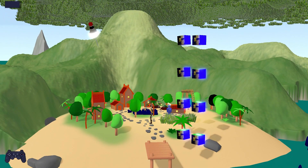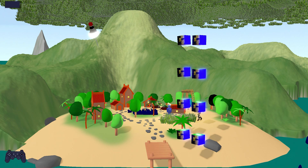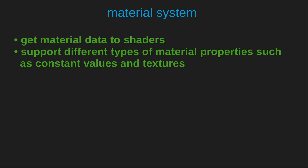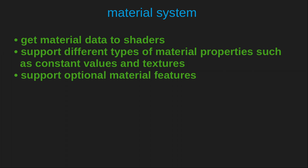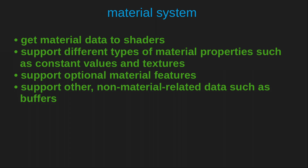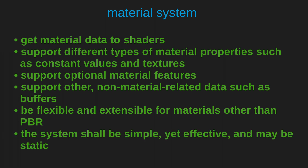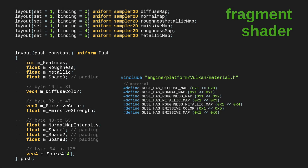We want an entry-level material system — the goal is to prepare the engine for advanced render techniques or maybe a simple game. It is okay if we have to recompile the engine to add a new shader or material. So goal number six is to have a static material system and not require dynamic pipeline creation based on description files or shader reflection. As long as the code is easily extensible, we're good. In summary: get material data to the shaders, support constant values and textures, support optional material features, support non-material-related data such as buffers, be flexible and extensible, and remain simple and static.